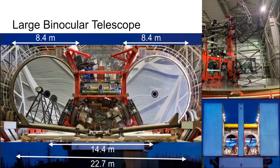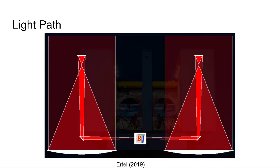These devices include the LBTI, Lucy, Pepsi, and others. This next slide demonstrates essentially what was discussed previously, but gives a nice visual representation of how these light rays travel throughout the system.